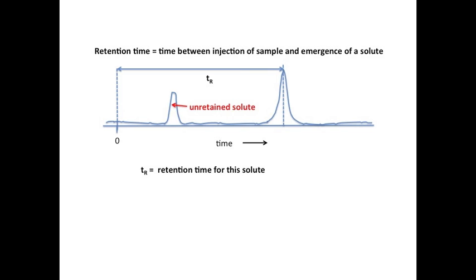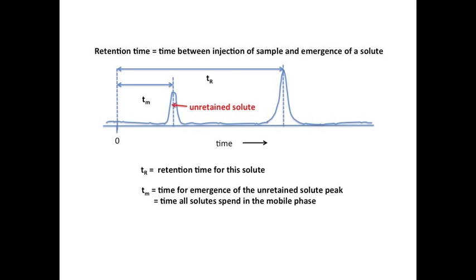Any peak that goes through the entire column without any delay in the stationary phase is called an unretained solute. Its elution time is special because it gives us the time that all solutes spend in the mobile phase. It helps us calculate the time that each solute spends in the stationary phase. This is also known as the adjusted retention time for that solute.